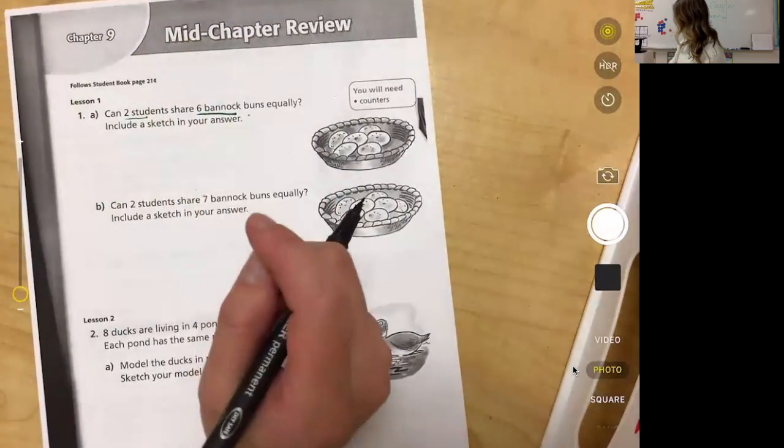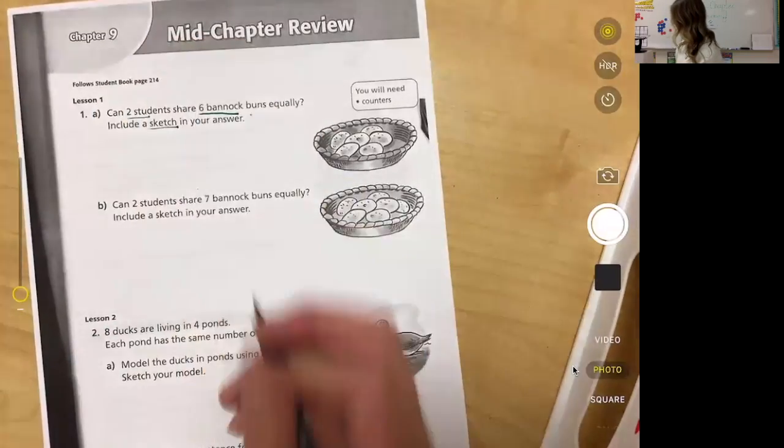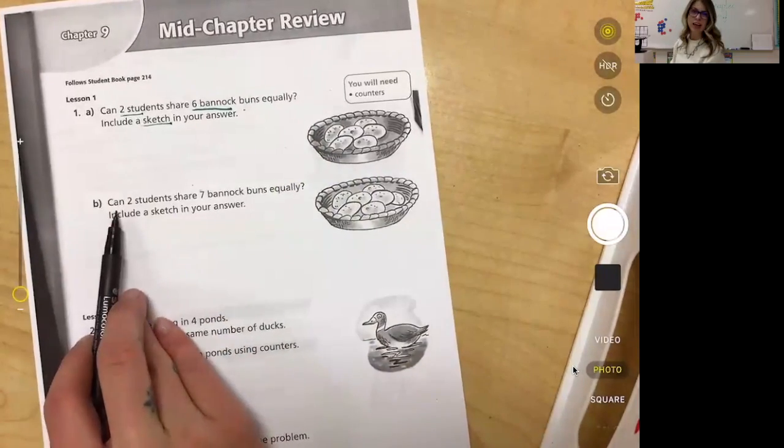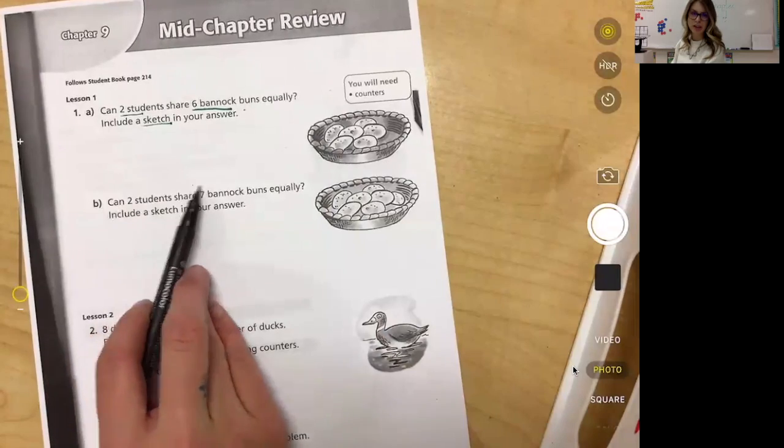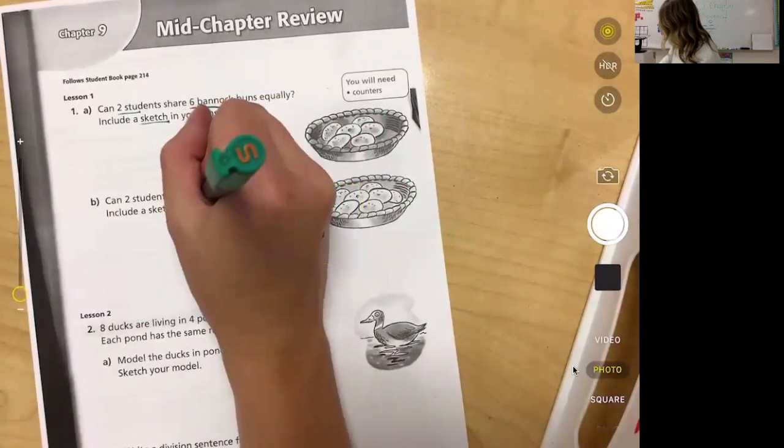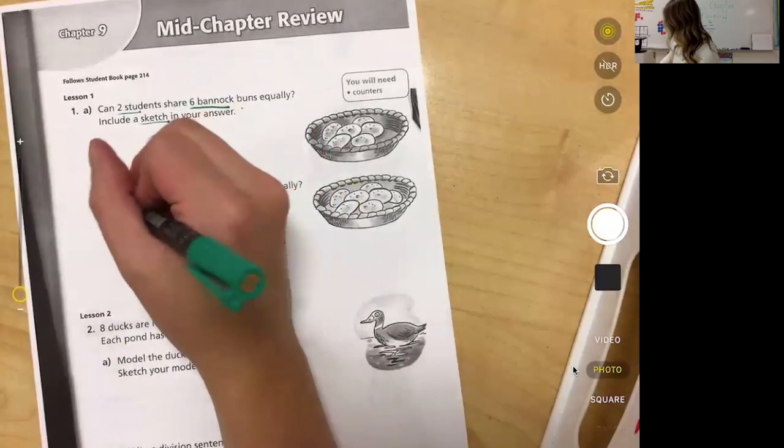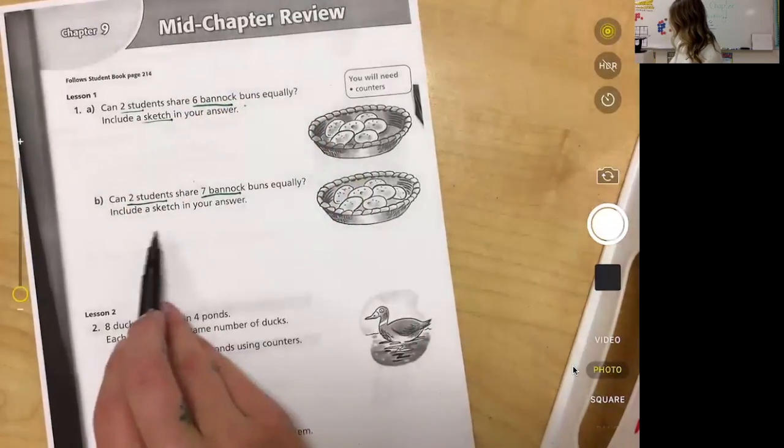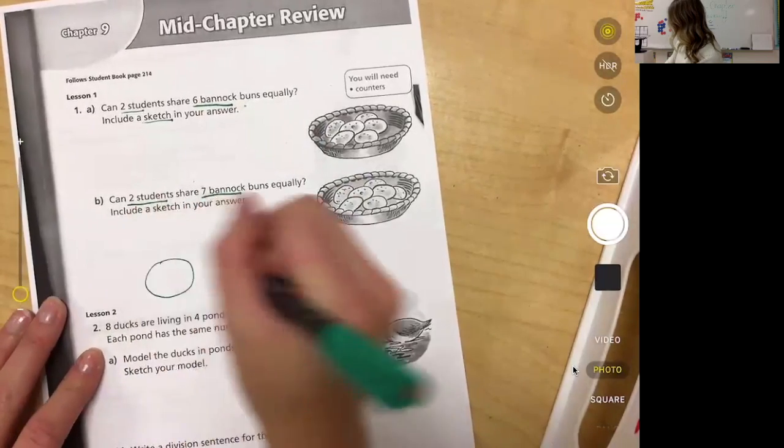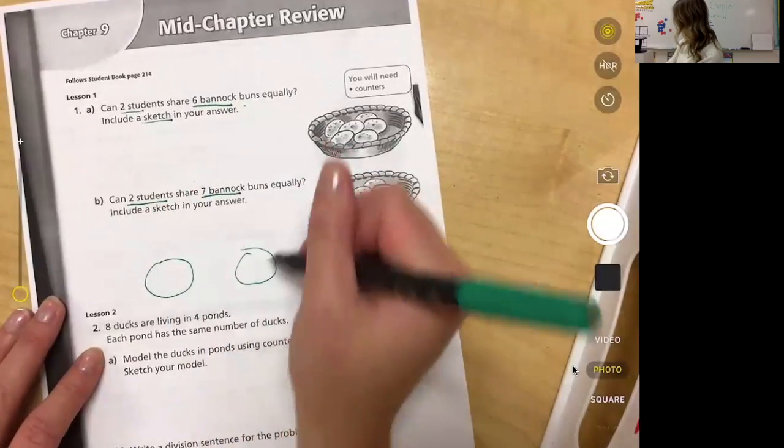Number one B says can two students share seven banana chunks equally? Now think about it, what is my big altogether number? It's seven. I'm making two groups again, so I'm going to draw my seven banana chunks and I'm going to divide them into two groups. Draw my seven banana chunks, cross them off as I put them in. You can do the same thing for up here.